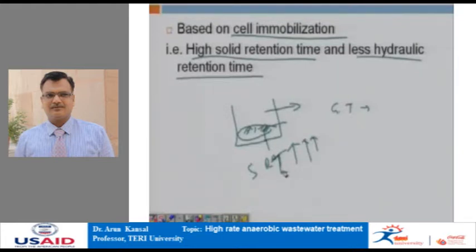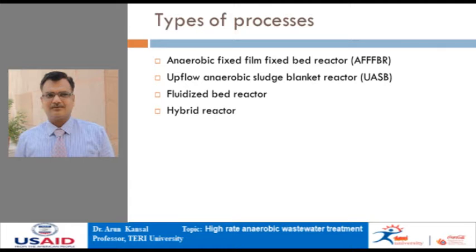The technologies able to achieve high SRT without increasing HRT — the most commonly used types of processes — are: the anaerobic fixed film fixed bed reactor (AFFBR), the upflow anaerobic sludge blanket (UASB) reactor, the fluidized bed reactor, and a hybrid reactor which is a combination of the two. There are other configurations like the high rate anaerobic rotating biological contactor, but these four are the most widely used.